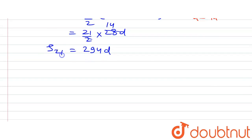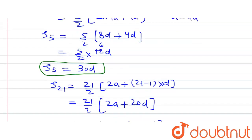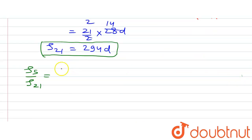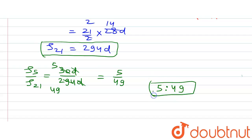Now we have S5 = 30D and S21 = 294D. The D cancels out, giving us 30/294. Dividing both by 6, we get 5/49. So the ratio of the sum of first 5 terms to the sum of first 21 terms is 5 ratio 49. This is the answer to the second part of the question.